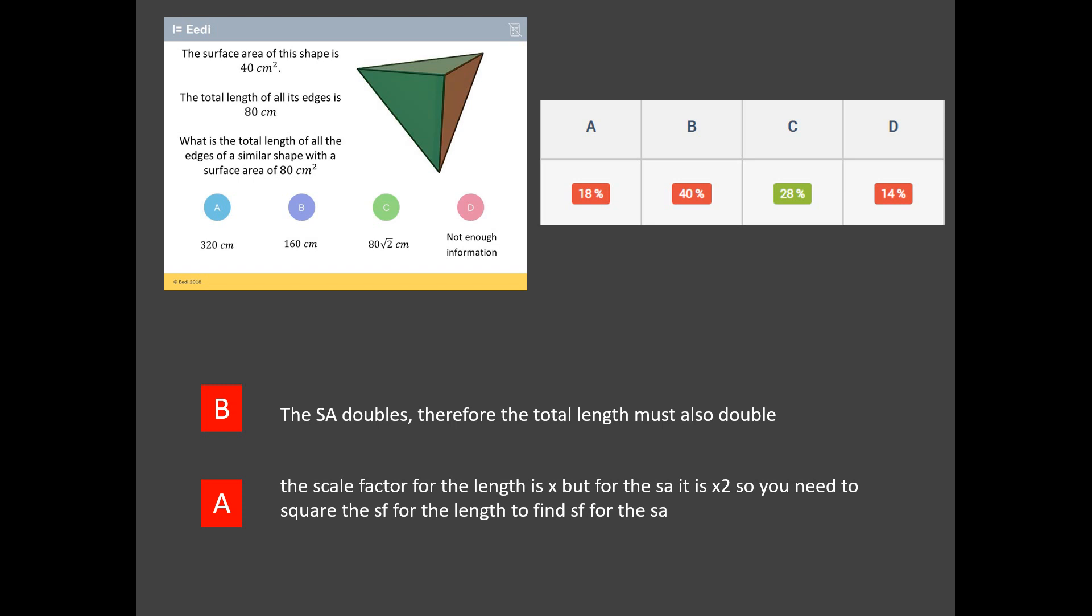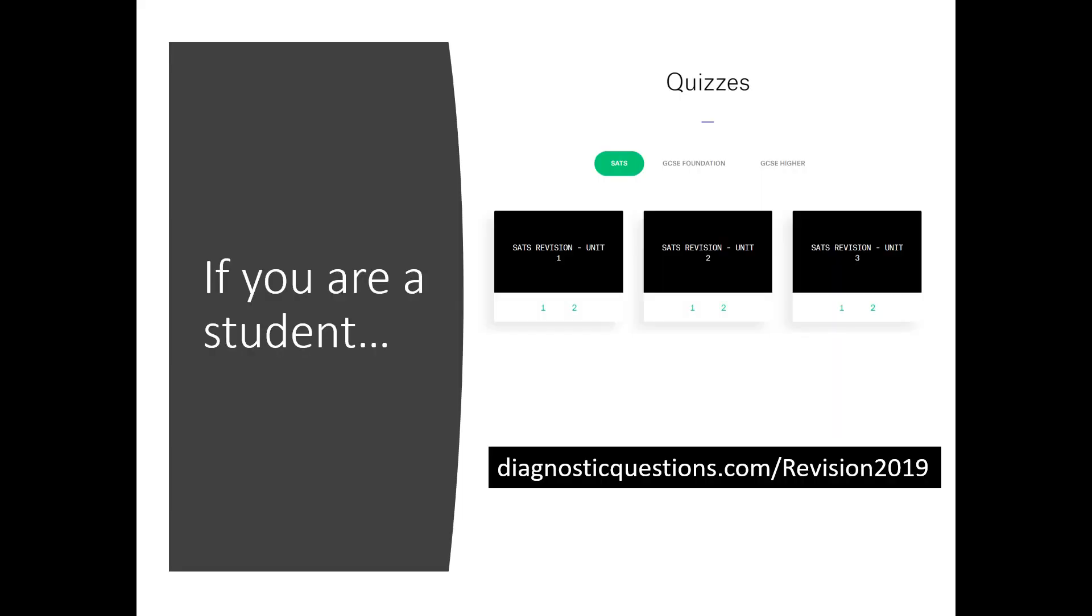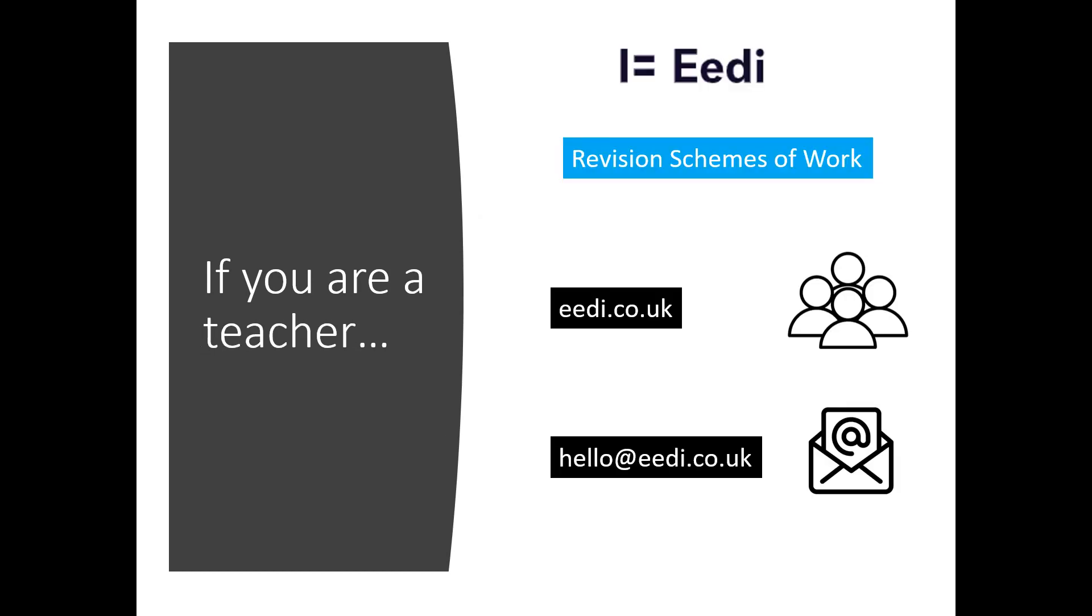How did you get on with those three questions? Three tricky questions. Don't worry if you struggled with them - we've seen thousands of students struggle with these all around the country. But by confronting them and discussing them, hopefully we can get our heads around them. If you're a student and you want more of those, go to diagnosticquestions.com/revision2019. There's 20 of those for you to play around with. And if you're a teacher and you want to set your students up on these so that you can set them as quizzes and it'll be marked for you automatically, it's all completely free. Go to eedi.co.uk to sign up for the revision schemes of work, or drop us an email at hello@eedi.co.uk and we can help you get your kids on the system. Hope you found that useful. I'll be back with another Beat the Nation soon. Take care and bye for now.